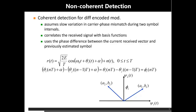Otherwise there will be a very high probability of bit error. If that slow variation is called alpha, and we assume it is not a function of time due to its slow nature, then taking the difference between two consecutive phases — theta_i(t) plus alpha and theta_{i-1}(t) plus alpha — the alpha will be cancelled out, and we can directly say the information is stored in the difference of phase.